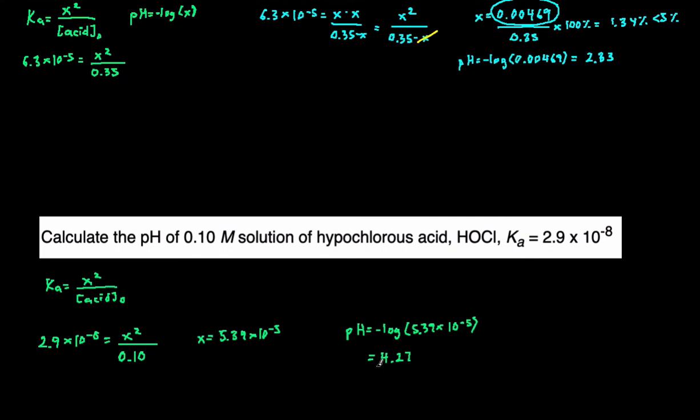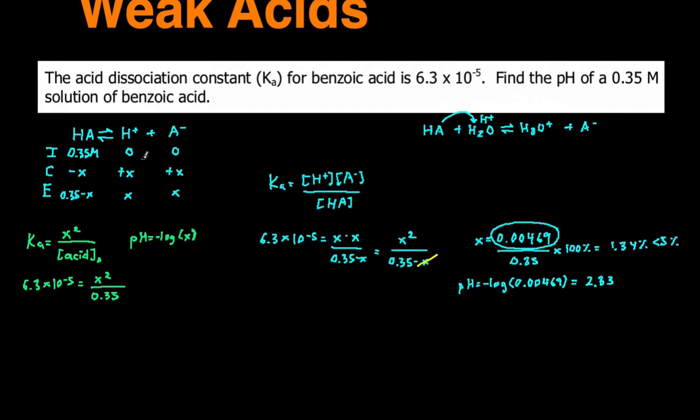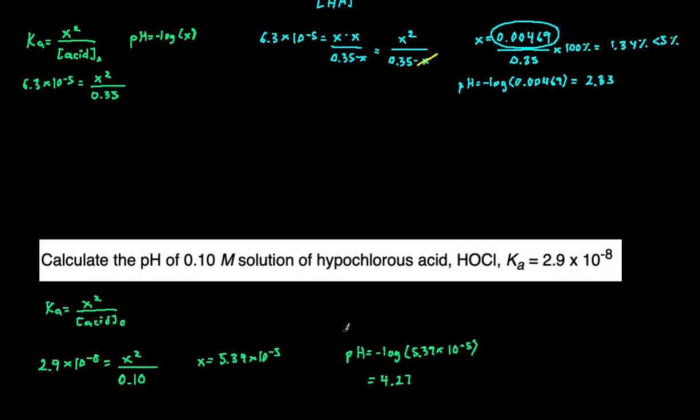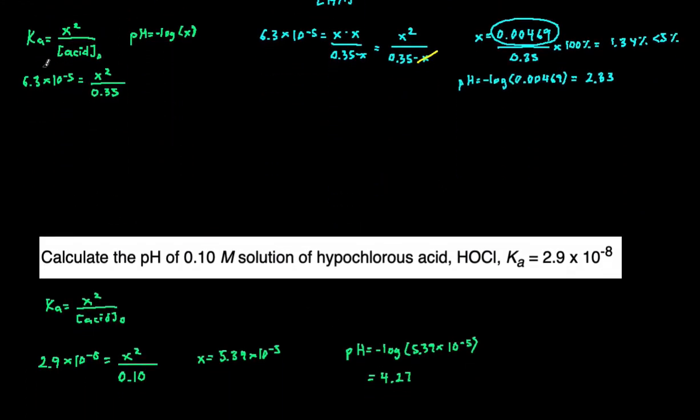Hopefully that made a lot of sense. We talked about how to show all your work to calculate the pH of a weak acid, starting with the reaction, setting up the ice table, going into Ka, using the shortcut to solve for X, then checking if X is really less than 5%, and then plugging in pH equals negative log of X. And then we also talked about the shortcut, how we can just skip all of that and set up Ka equals X squared divided by the concentration of the acid, solve for X, then take the negative log of X to get the pH.